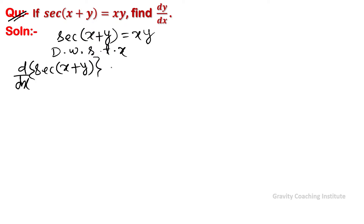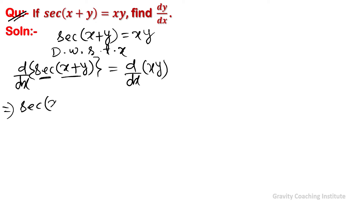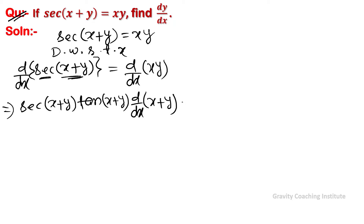We will use the chain rule on the left side. So: sec(x+y) · tan(x+y), and then differentiate x+y. On the right side, we will use the product rule: x into differentiation of y, plus y into differentiation of x.